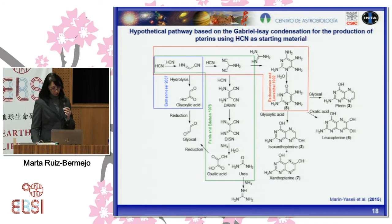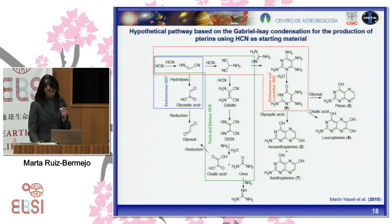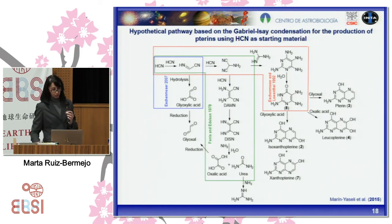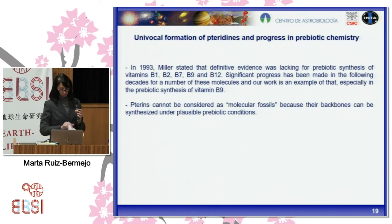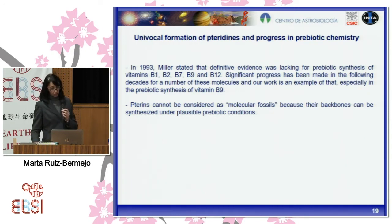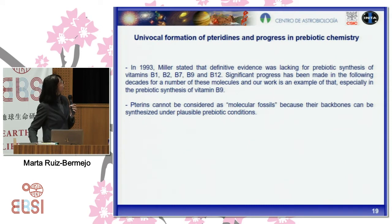A hypothetical pathway for the formation of pteridines from cyanide polymerization is proposed, based on the Gabr-Isai condensation. The aminopyridine intermediate undergoes cycloaddition with 1,2-dicarbonyl compounds to form pteridines. As a general conclusion about the identification of pteridines in hydrogen cyanide polymers, we can say that pteridines cannot be considered merely as molecular fossils, because their backbone can be synthesized under possible prebiotic conditions.